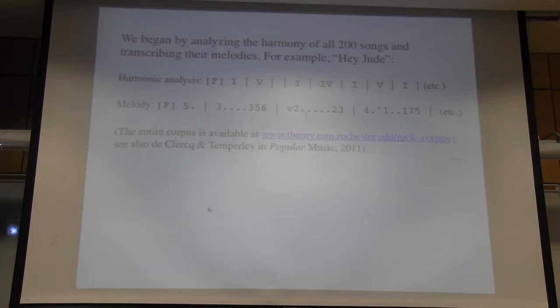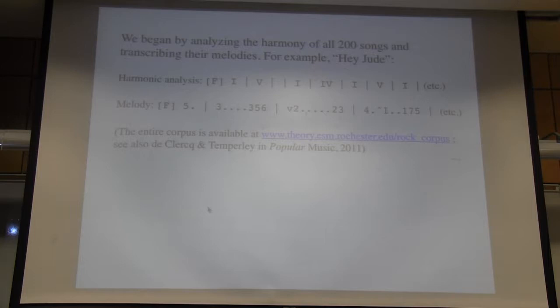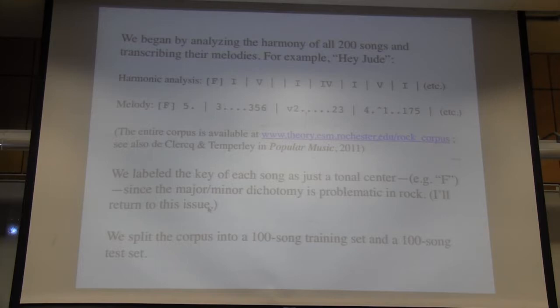We began by analyzing the harmony of all 200 songs and transcribing their melodies. Here's the opening of Hey Jude — a very straightforward Roman numeral analysis. We transcribed the melody using scale degrees: 5, 3, 3, 5, 6, 2, 2, 3, 4, 1, etc. The entire corpus is available online and we reported on it in a pop music journal a couple of years back. We labeled the key of each song with just a tonal center, and didn't label keys with major or minor since that distinction is controversial with rock. We split the corpus into a 100-song training set and a 100-song test set.